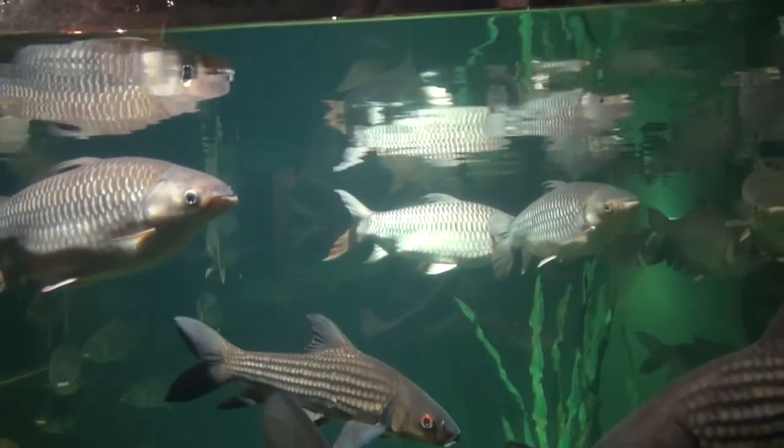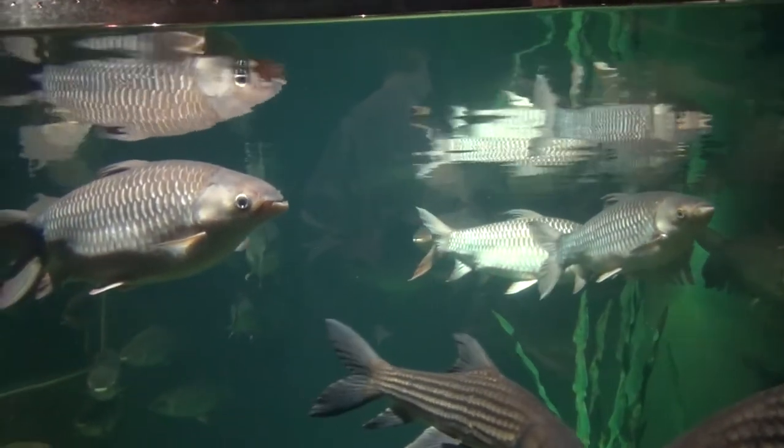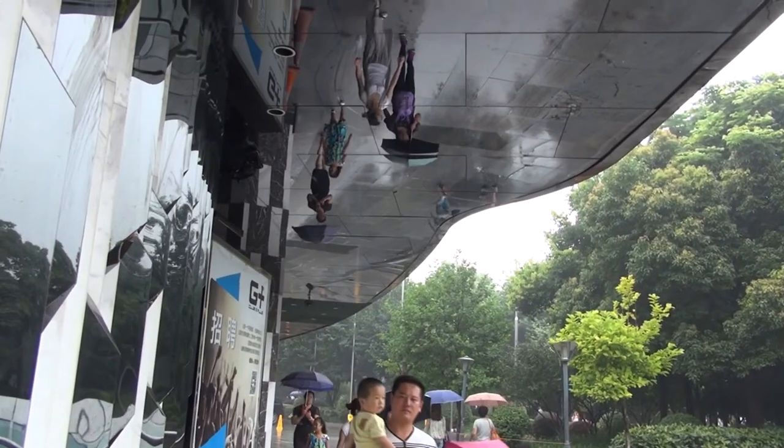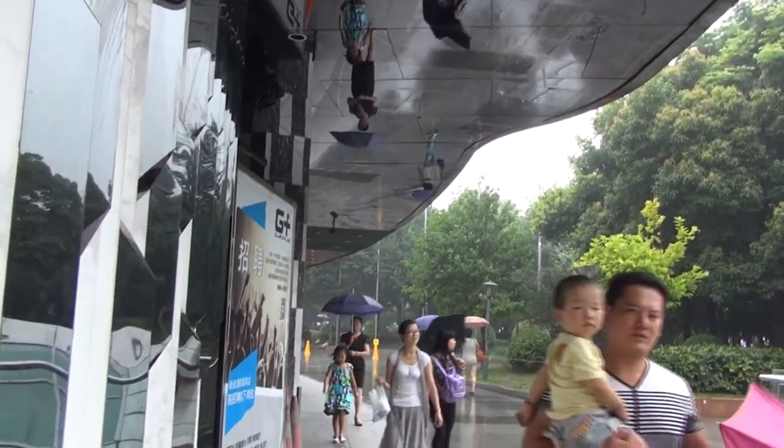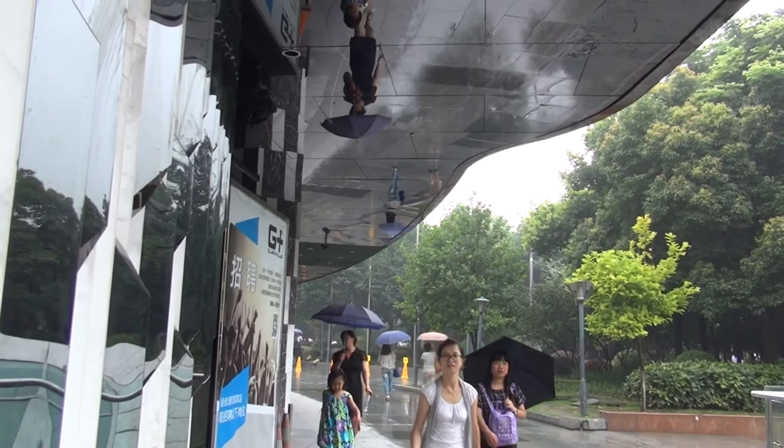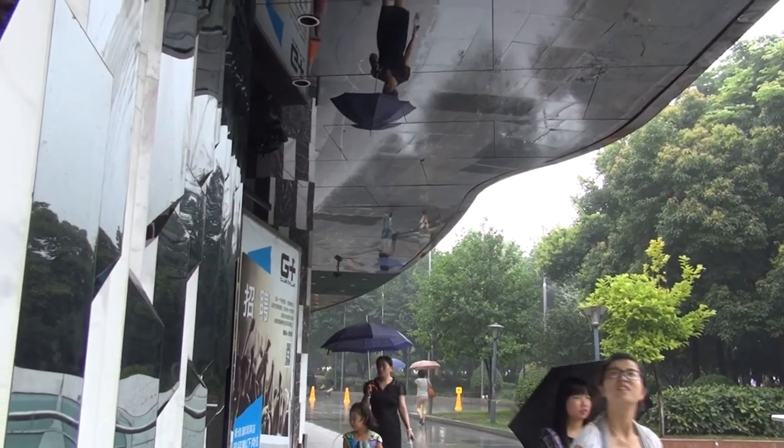The surface is acting as a mirror, letting us see what the fish would look like if viewed from above. The mirror-like reflection above the walkway shows us what the people would look like if we viewed them from above.